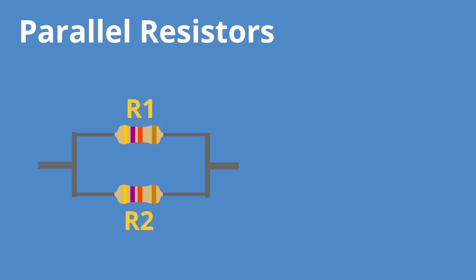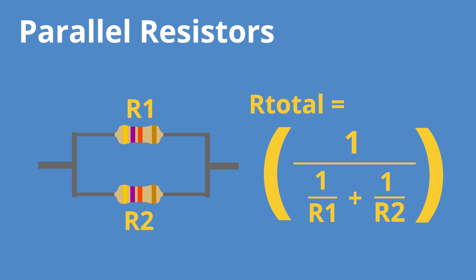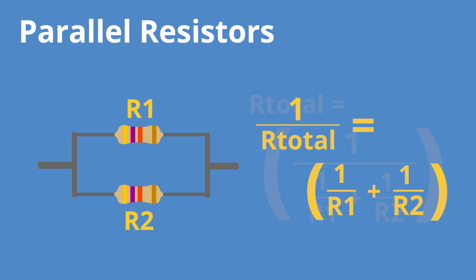If you have resistors in parallel, it's a little trickier but not too bad. You have a circuit diagram where the two resistors run parallel to each other. The easier way to think about it is: 1 over R-total equals 1 over R1 plus 1 over R2. This extends if you have R3, R4, R5, all still in parallel — it would be 1 over R1 plus 1 over R2 plus 1 over R3 plus 1 over R4, and so on.